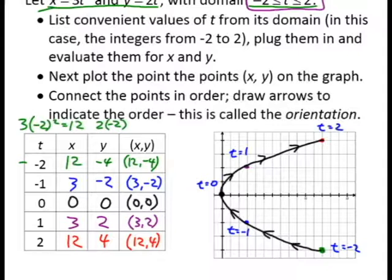Also notice that we get an idea of speed because between t equals negative 2 and t equals negative 1, we travel a greater distance than between when t is negative 1 and t equals 0. This particle is slowing as it approaches the vertex of the parabola. So that is the extra information that we get by using parametric equations.